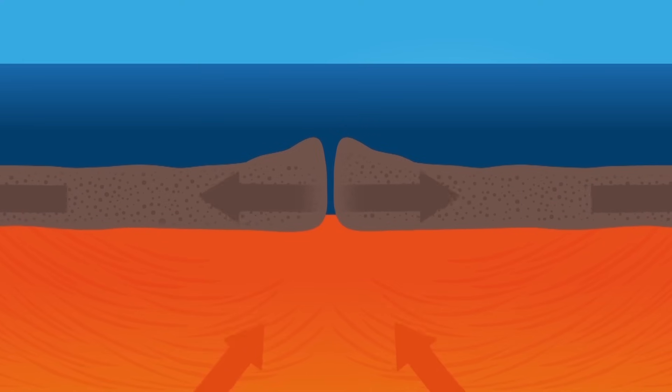When two oceanic plates move apart, the seam is called an ocean ridge. Magma from inside the Earth escapes here. This drives the plates further apart and makes them grow.